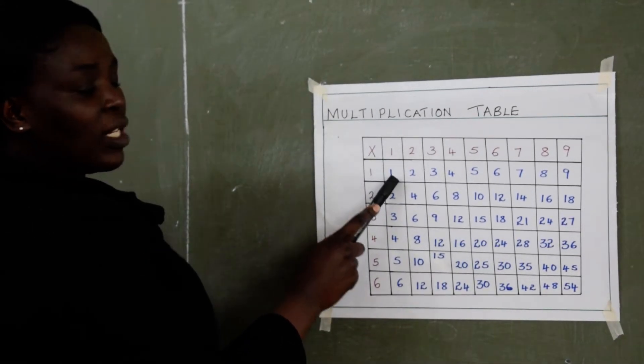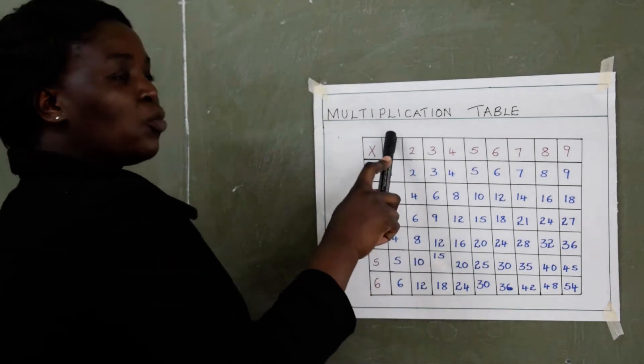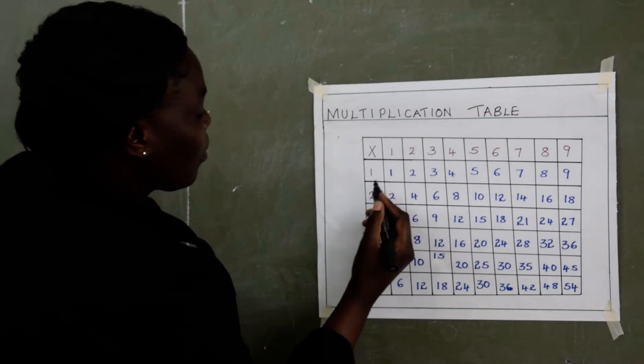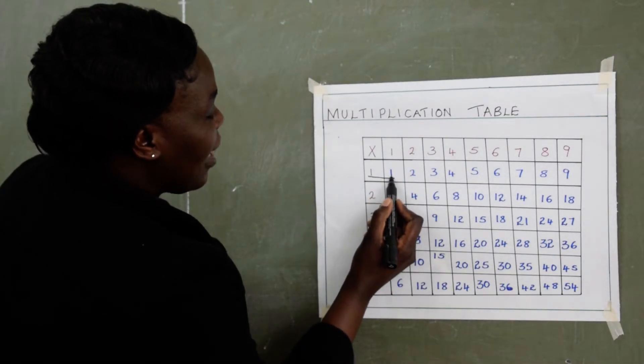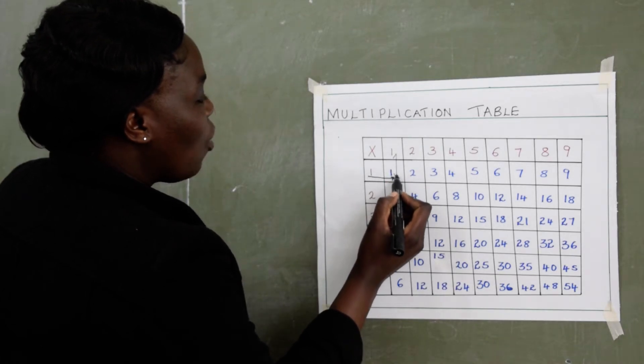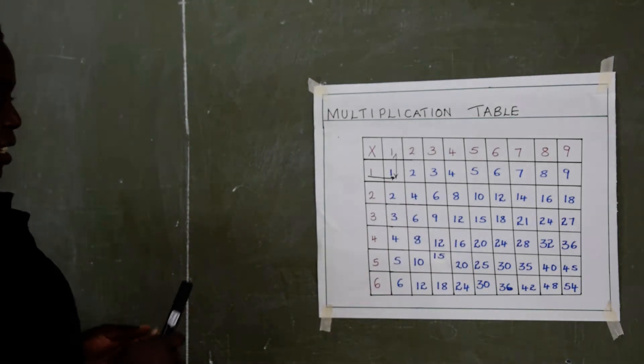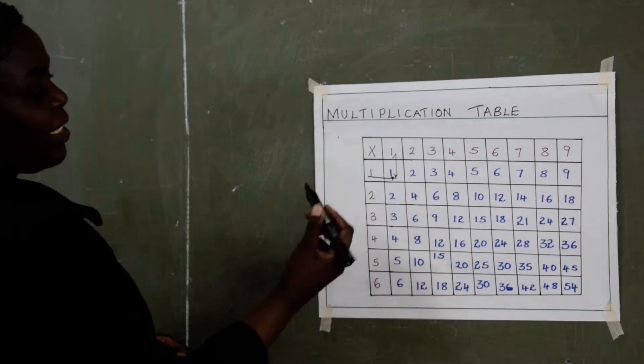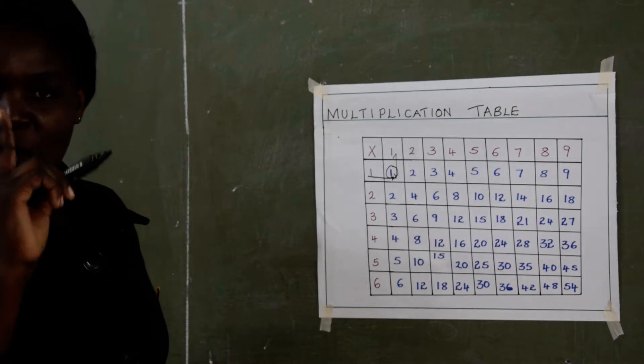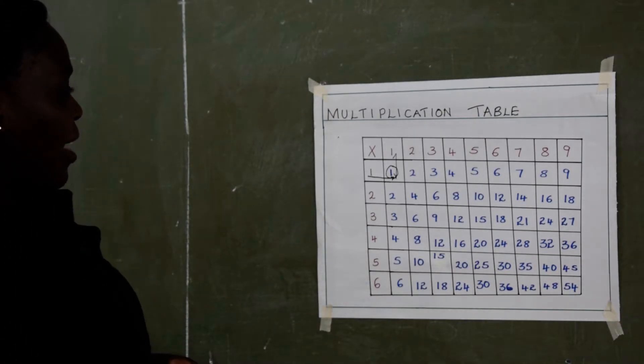So our multiplication will be 1, like that, times 1. Where they meet is the answer. So where 1 and 1 are meeting is 1. So 1 times 1 is 1. We can try another one.